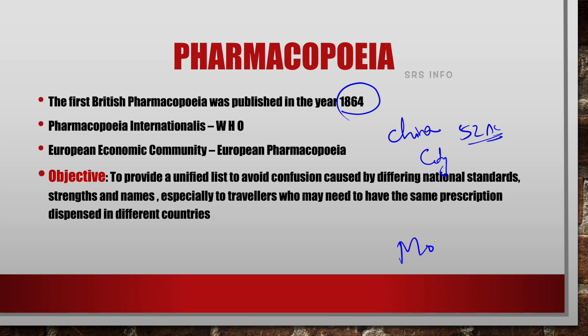Do you know the word monograph? A monograph is a written detail or specification about a specific subject or matter. At that time, Pharmacopoeia was considered just like a monograph — we can call it a City Pharmacopoeia. But later on, it was developed into a standard book, a standard preparation.